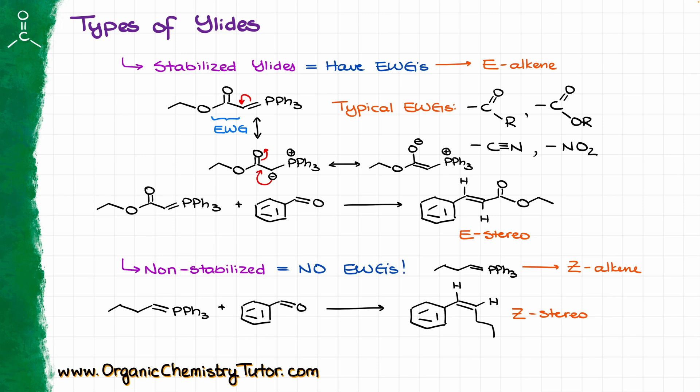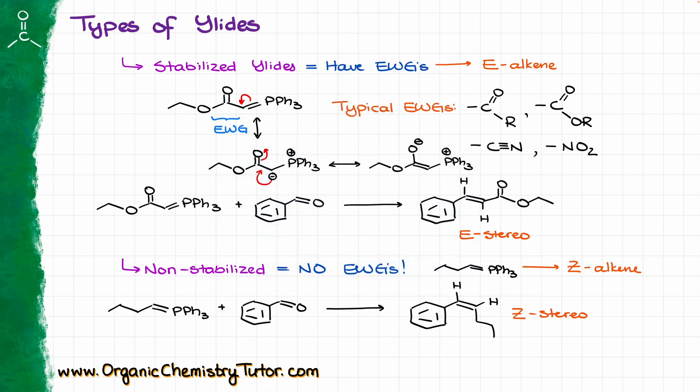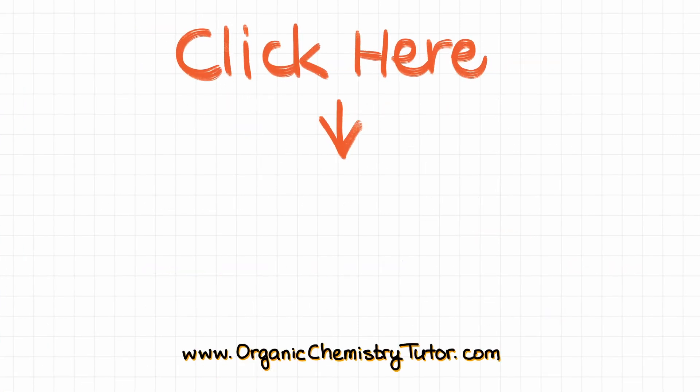We typically do not cover modifications to the Wittig reaction in an introductory organic chemistry course, so you're not likely to see those fancy Wittig versions in your course — but if you do, I'll talk about those in another tutorial. In the next video, we are going to go through a few Wittig reaction examples and I'll show you a nifty trick for predicting the product without having to draw the mechanism every single time. Make sure you subscribe so you don't miss that one, and as always, thank you for watching!